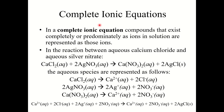We need to take our molecular equations and generate complete ionic equations. In a complete ionic equation, compounds that exist completely or predominantly as ions are represented as those ions. In the reaction between aqueous calcium chloride and aqueous silver nitrate, we have three aqueous ionic compounds: calcium chloride, silver nitrate, and calcium nitrate. Subscripts become coefficients in front of the individual ions. Calcium chloride breaks apart into one calcium ion and two chloride ions.